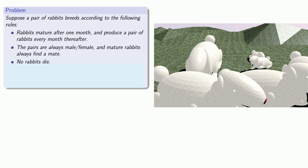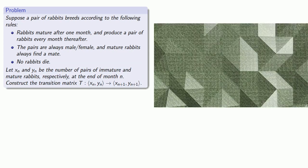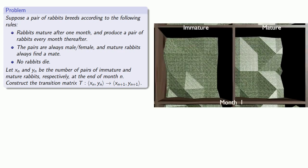And so what we're interested in is we want to let xn and yn be the number of pairs of immature and mature rabbits, respectively, at the end of month n. And we want to construct the transition matrix that tells us how to go from the number of immature and mature pairs at the end of month n to the number of immature and mature pairs at the end of month n plus 1.